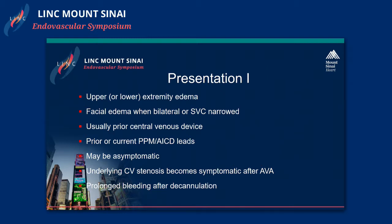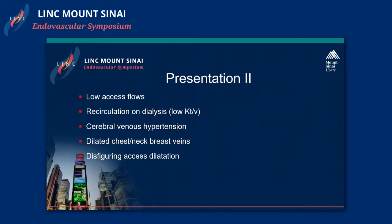In most cases, the patient has had a prior central venous device. The incidence of central venous stenosis is extremely high when patients have wires for pacemakers, AICD, etc. The process can be completely asymptomatic until such time as the AV access is created. Additionally, patients can have prolonged bleeding after decannulation — this is a very common call that we get in patients with central venous stenosis. Low access flows can lead to inefficiency of dialysis and recirculation. Patients can complain of various nonspecific neurologic things. Cerebral venous hypertension is not uncommon. Patients have very dramatic dilated neck, chest, and breast veins, and can get disfiguring axial dilatations.